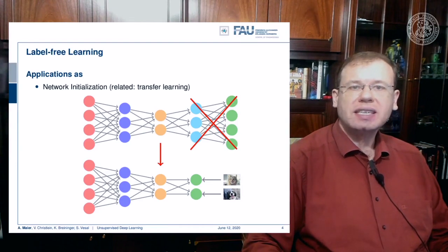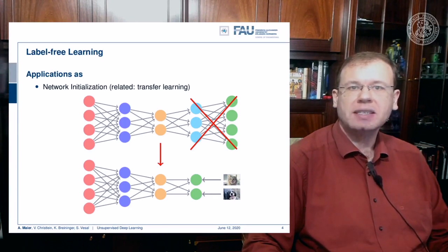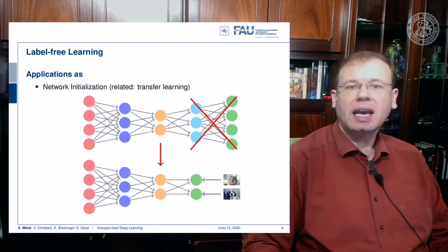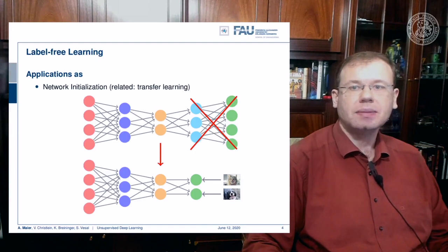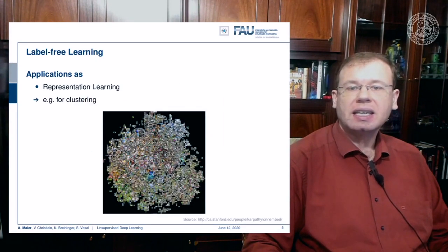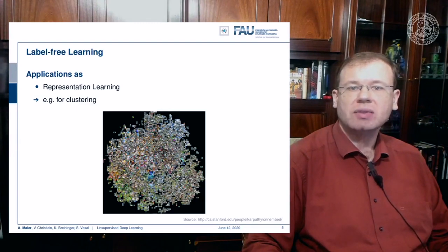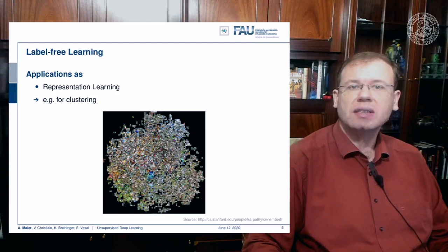If we are able to do such a dimensionality reduction and preserve lots of information in a low-dimensional space, we potentially have fewer weights to train for a classification task. This is very similar to what we discussed when talking about transfer learning. You can also use this for clustering, as seen in the visualization chapter, where we had a nice dimensionality reduction and zoomed in to look at different places. A good learning method that extracts a good representation allows you to identify similar images in a low-dimensional space.